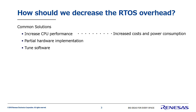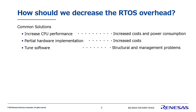Partial hardware implementation also increases costs. Software tuning is a useful solution, but tuning often leads to problems in software development administration, like disorganized architecture or problems reusing the software.